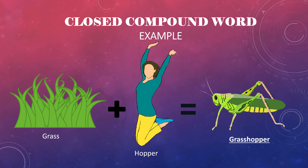Let's look at an example for a closed compound word, shall we? The word grass plus the word hopper makes the word grasshopper. Do you notice how there is no space between the word grass and the word hopper in the word grasshopper? This is how you write a closed compound word — with no space between the two words.